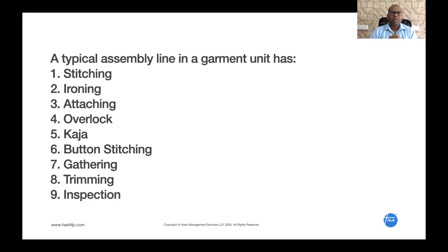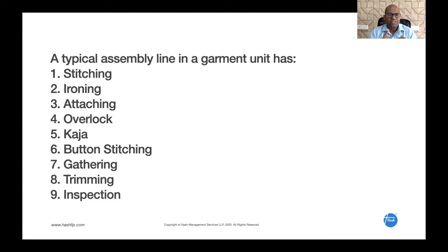A typical assembly line in a garment unit consists of these activities. I have not included the cutting or finishing and packing activities — we'll focus on the assembly. These activities include stitching, ironing, attaching two or three pieces together, overlocking, gaja activity, button stitching, gathering, trimming, and inspection.